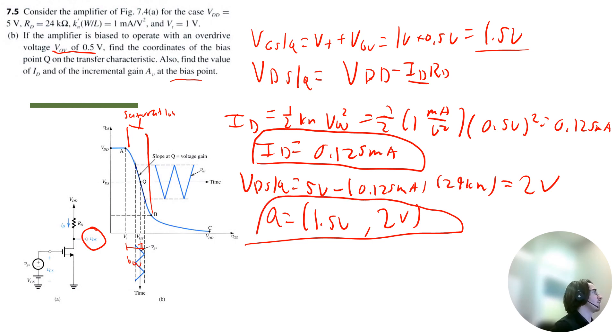Lastly, we just need to solve for gain. I'm going to use the equation negative KN V overdrive times RD. So that's going to be negative 1 milliamp per volt squared times V overdrive times RD, 24 kilo ohms. So I get an incremental gain of negative 12 volts per volt. Let's move on to part C.